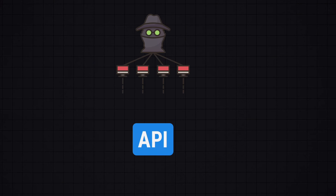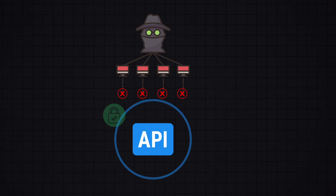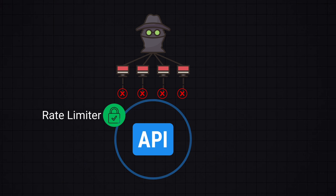Another best practice is to set rate limits. This can prevent the API from DDoS attacks by controlling the number of requests a user can make in a certain timeframe, preventing a single user from sending too many requests to your API.